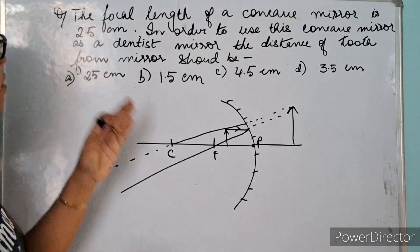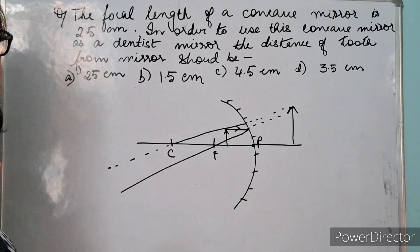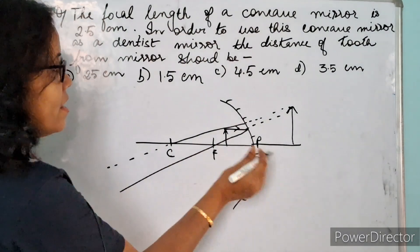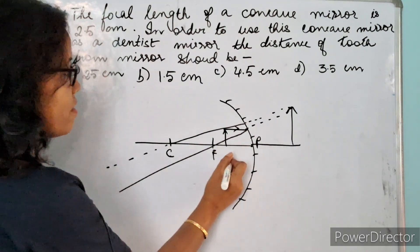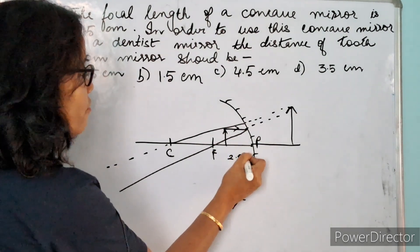In this case we know that the focal length of the mirror is 2.5 centimeter. Focal length means the distance from the pole to the focus, that is 2.5 centimeter.